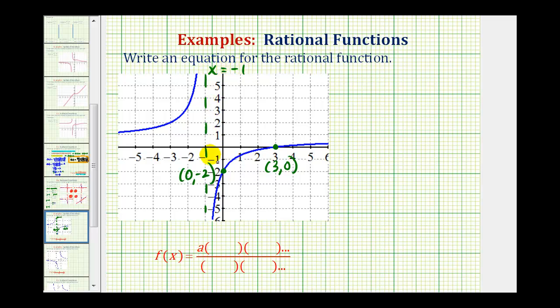This is the information that we need to determine our rational function. But we do have to remember, knowing the vertical asymptote is x equals negative one gives us information about a factor in the denominator, and knowing that we have an x-intercept of three gives us information about a factor in the numerator. And then we can use the y-intercept, or this point here, to determine the value of our constant a.